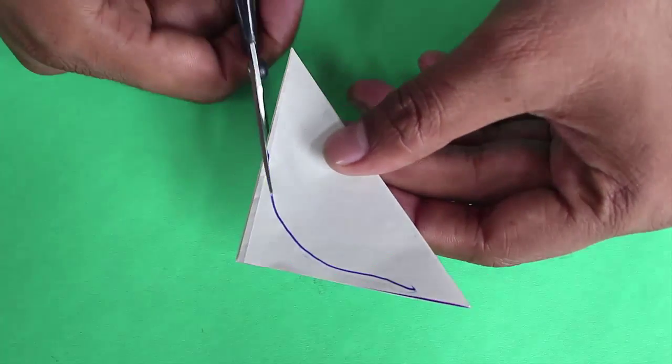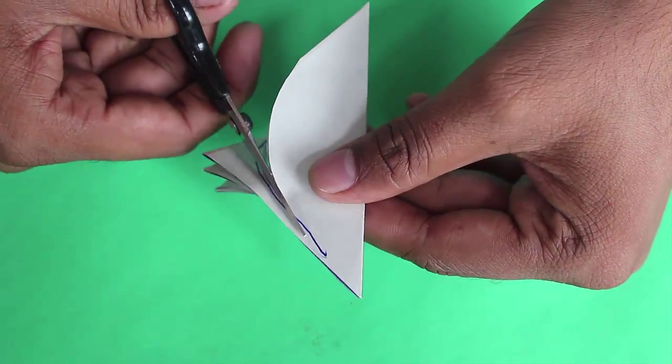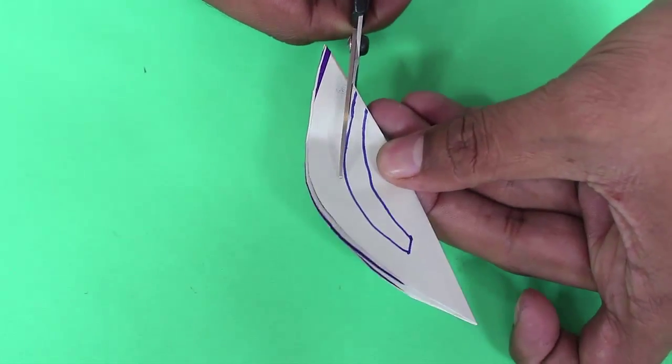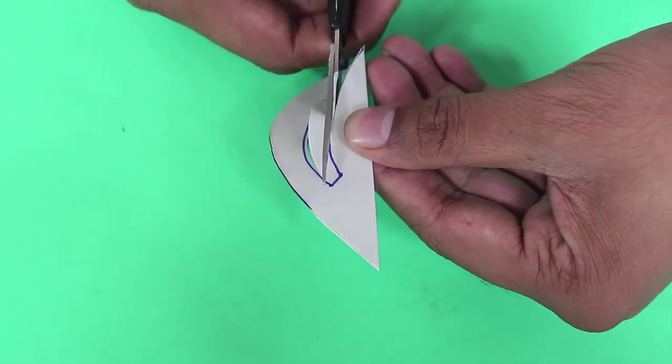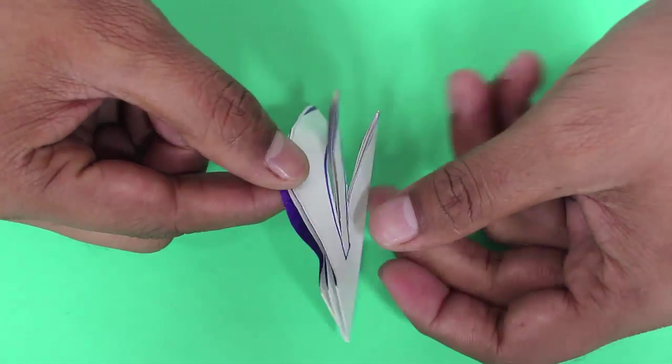And then once again as shown, draw a petal. You just need to trim off a little bit of the right angle corner, and once again draw two curved lines and cut along the curved lines.